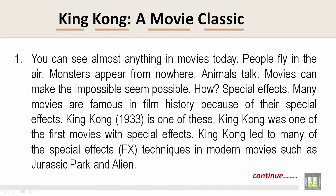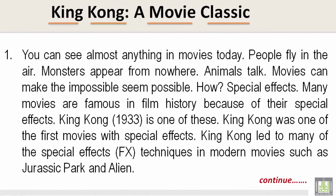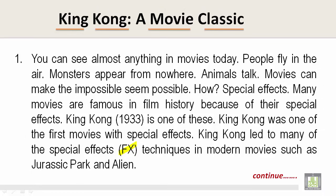King Kong: a Movie Classic — Paragraph 1. You can see almost anything in movies today. People fly in the air, monsters appear from nowhere, animals talk — movies can make the impossible seem possible. How? Special effects. Many movies are famous in film history because of their special effects. King Kong in 1933 is one of these. King Kong was one of the first movies with special effects, and it led to many of the FX techniques in modern movies such as Jurassic Park and Alien.